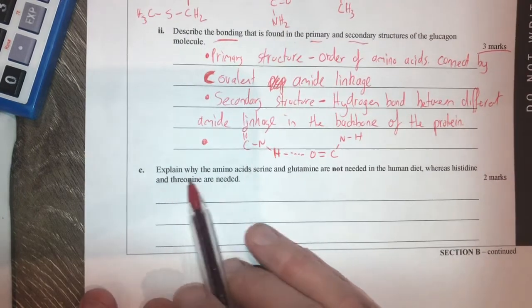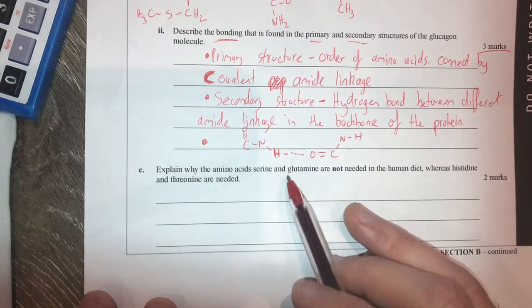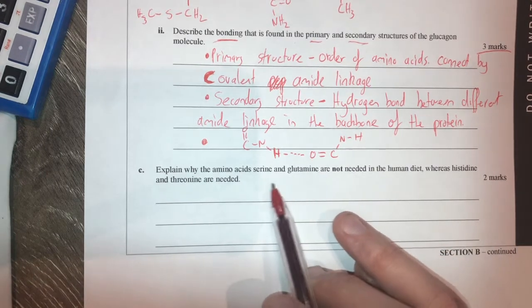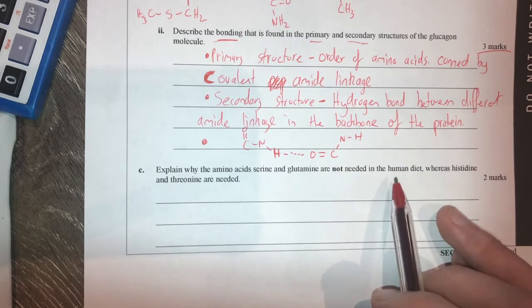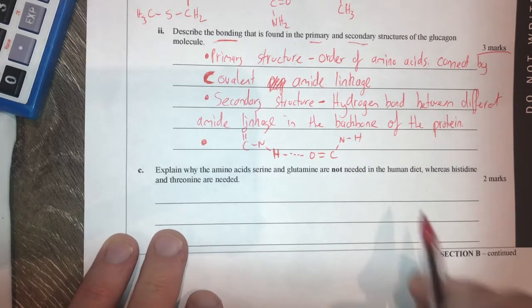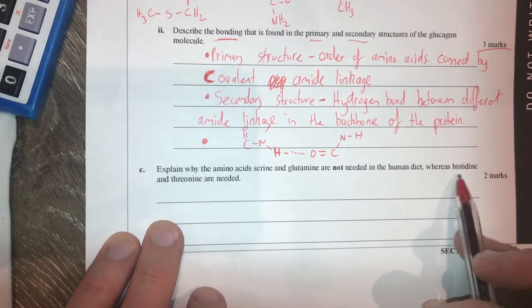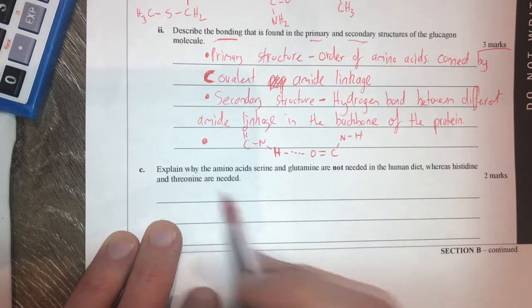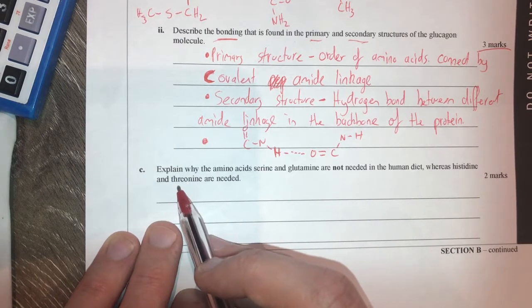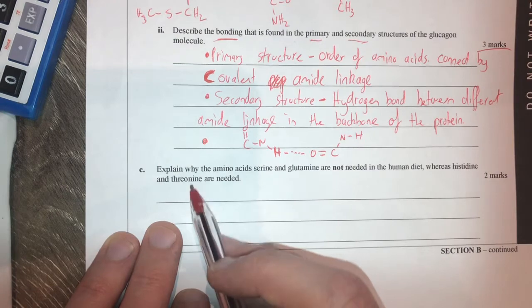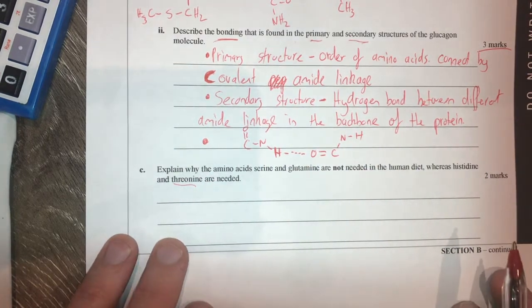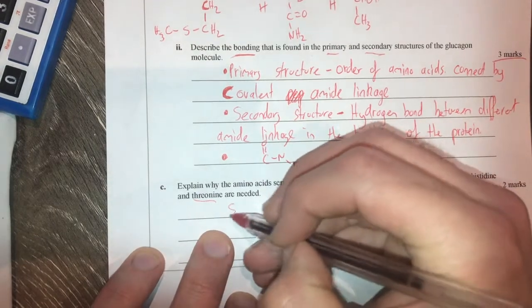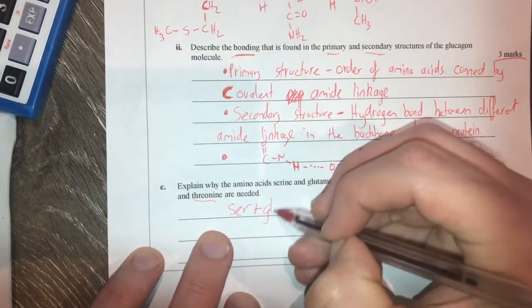Next question: explain why the amino acids serine and glutamine are not needed by the human diet, whereas histidine and threonine are needed. So what this means is we have Ser and Glu - these would be considered non-essential amino acids, and our body can produce these. So our body actually manages to make these by itself.